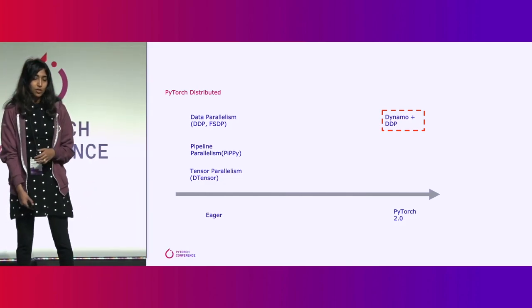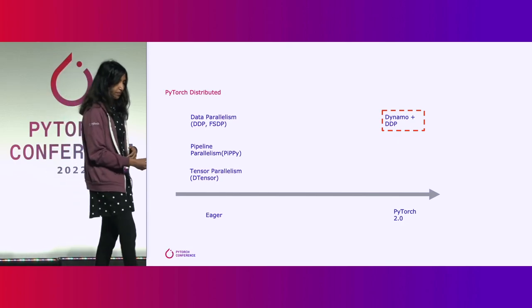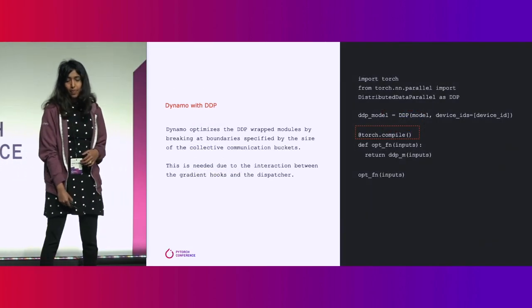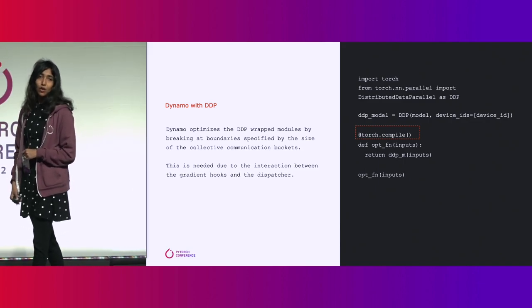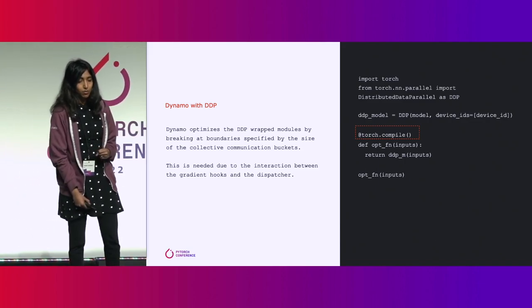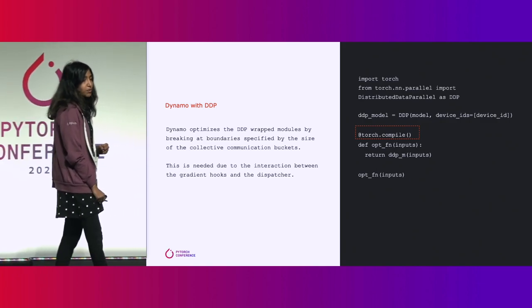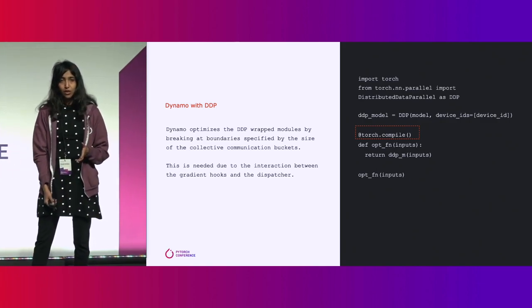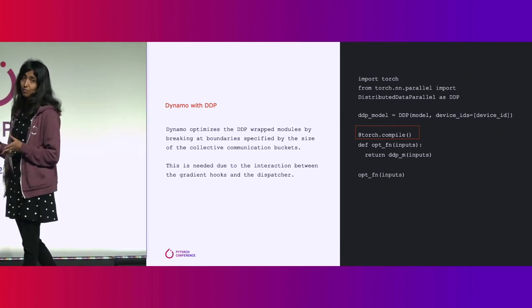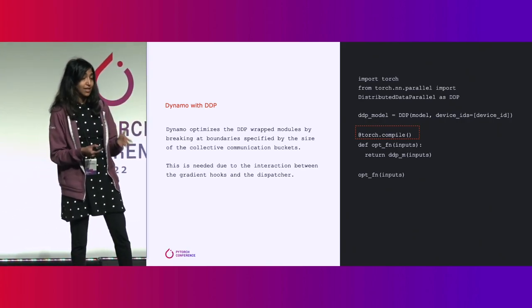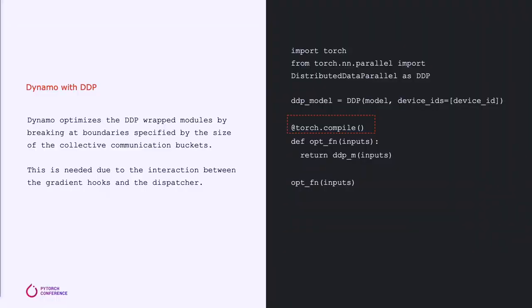As mentioned in the keynote, we've also enabled Dynamo support for DDP. Using a single line of code, torch.compile, we can now optimize this DDP example with Dynamo. Dynamo optimizes DDP by breaking the graph at the collective boundary. This means that the size of the subgraph, and basically the size of the parameters in the subgraph, is equal to the gradient reduction bucket size. This is needed for computation and communication overlap. Without this, you'd be compiling it to a single kernel with a smaller number of graphs, and you would essentially be calling collectives after the backward pass has been completed.